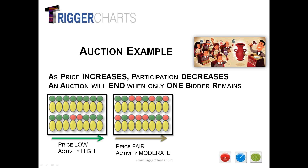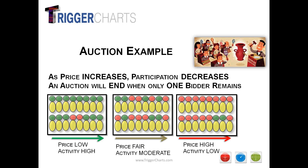As price reaches its absolute high, activity is low. When will the auction end? When the next-to-last bidder steps out and says 'that's too high.' So buyers will bid, price will increase — in fact, price is required to increase. Until the last bidder says no more. And what happens when the auction ends: one happy bidder jumps up and says 'I won!' Think of it in terms of value: did this person overpay or underpay? What caused the last bidder to step out?